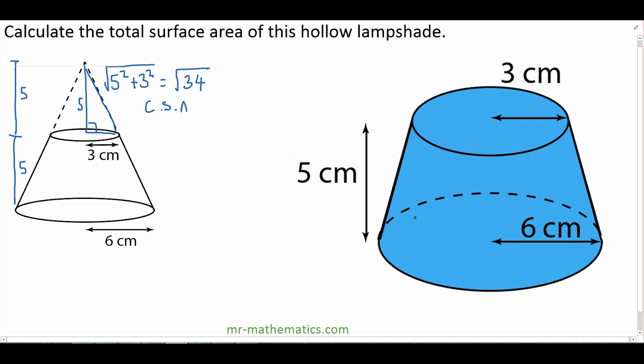The curved surface area of this cone, we can use the formula πRL. L is the length we have just worked out. So the radius is 3 times it by π times it by the root of 34.